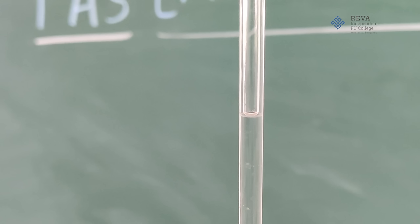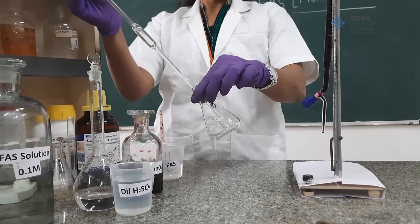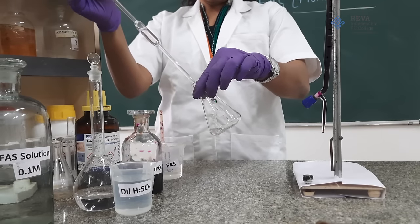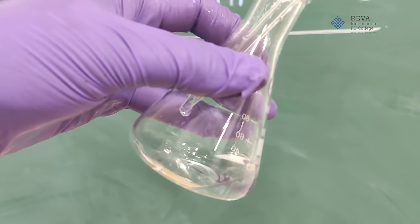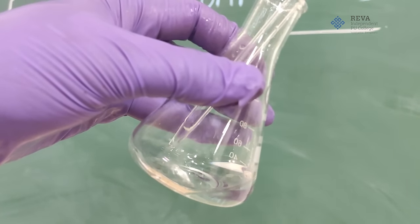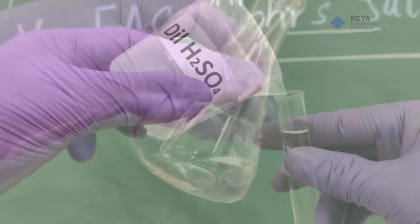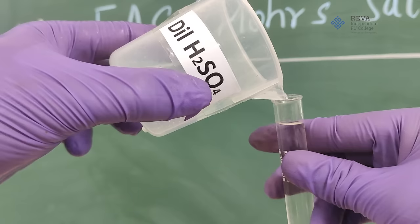Since ferrous ammonium sulfate is a colorless solution, look for lower meniscus. Now transfer the solution into a clean conical flask. At the last, if any solution is left out in the pipette, tap the bottom of a conical flask using your pipette thrice or four times.